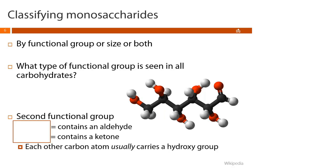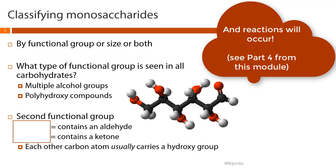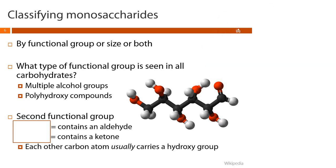You won't have to name individual carbohydrates like in the last two modules. Instead, we're going to classify monosaccharides by functional group and by size. Every carbohydrate has at least two alcohol groups, so we refer to carbohydrates as polyhydroxy compounds. They also have either an aldehyde or a ketone — a carbohydrate with an aldehyde is an aldose, and one with a ketone is a ketose.